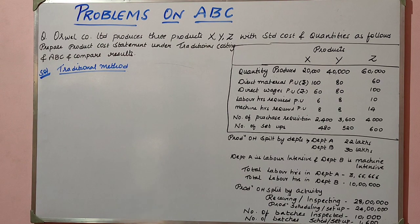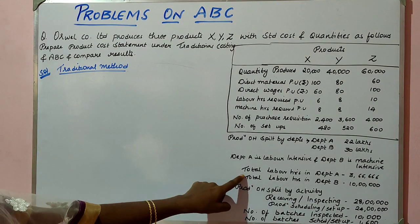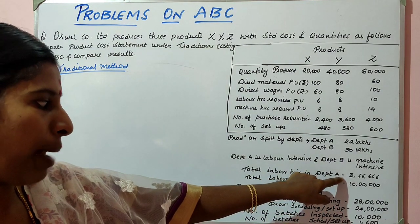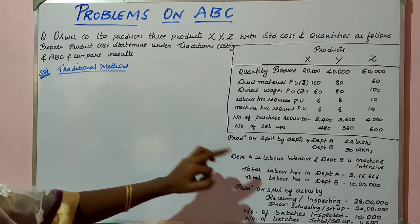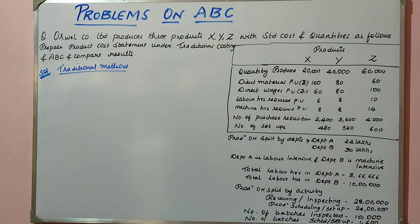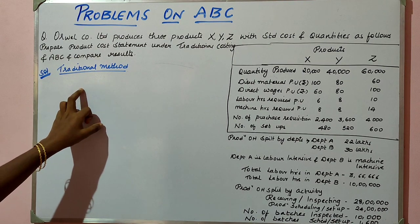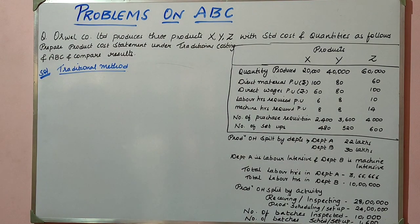As we discussed in the theoretical part of traditional costing, in traditional costing, overhead recovery rate is generally found out on the basis of either direct material, direct labor, or man hours, and that rate is distributed to the products. Here, the total labor hours for Department A are given, which means the overheads are distributed on the basis of labor hours. Let's start doing the solution using the traditional method.